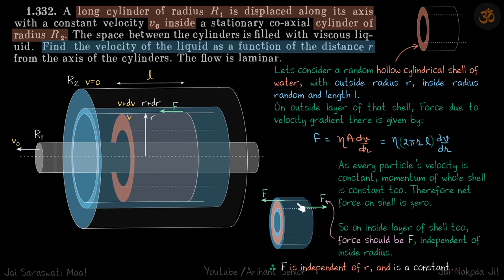Since the total momentum of this shell is conserved, net forces are zero. The force on the top layer is towards the left, that is F, and the force on the inside layer should be towards the right, also F. The inside radius was taken as random, so it doesn't matter at what distance you go — that force is always going to be F.